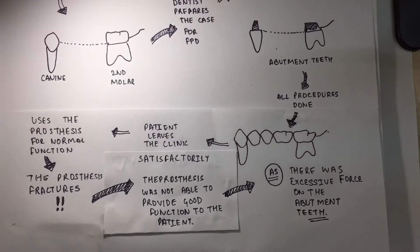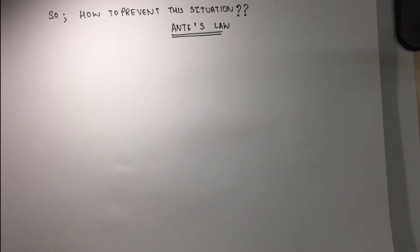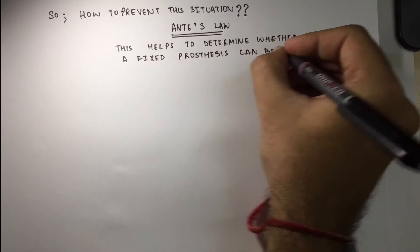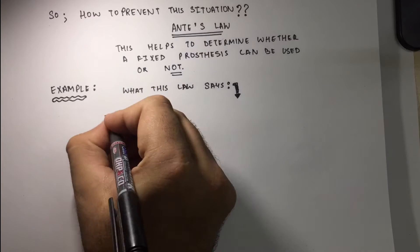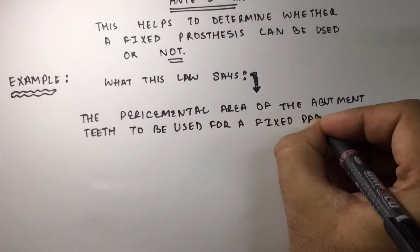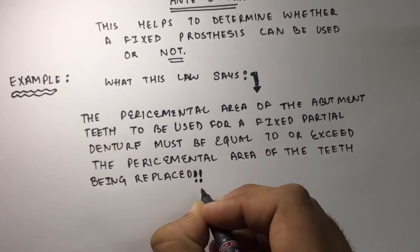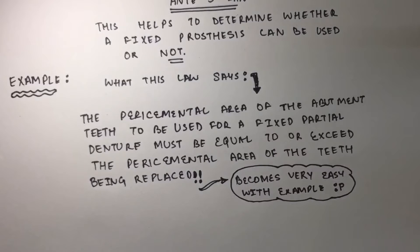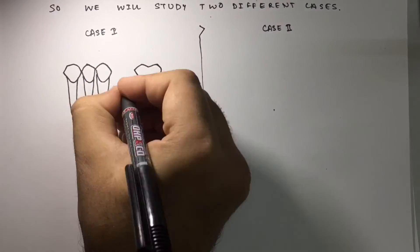There was excessive load on the abutment teeth. This is where Ante's Law comes in — it helps determine whether a fixed prosthesis can be used or not. Ante's Law states that the pericemental surface area of the abutment teeth to be used for a fixed partial denture must be equal to or exceed the pericemental surface area of the teeth being replaced. This becomes easier with an example using two cases.